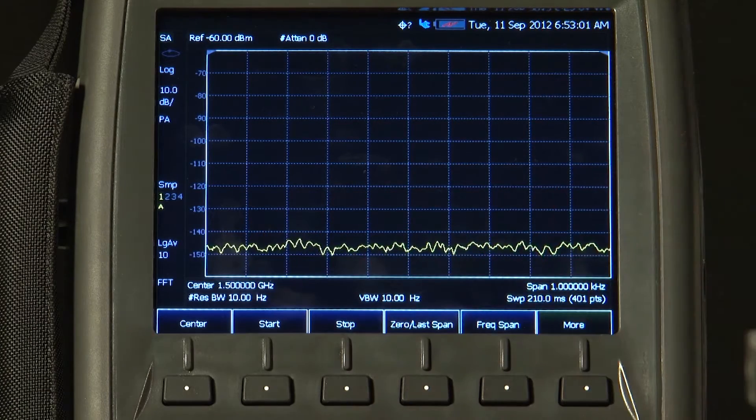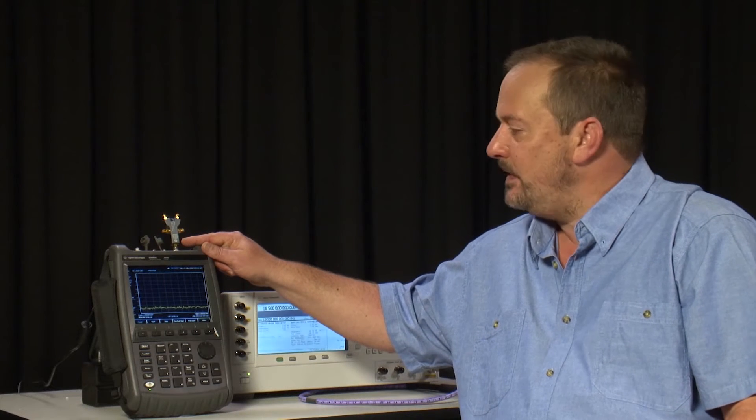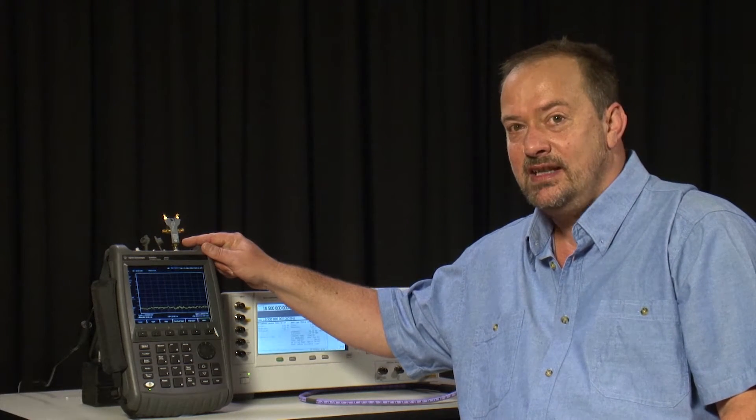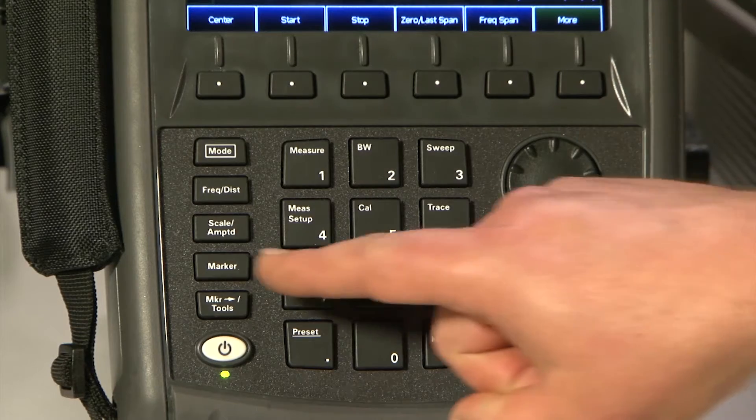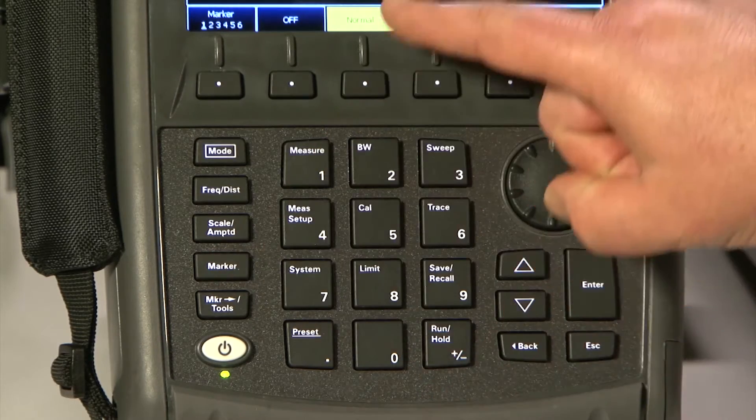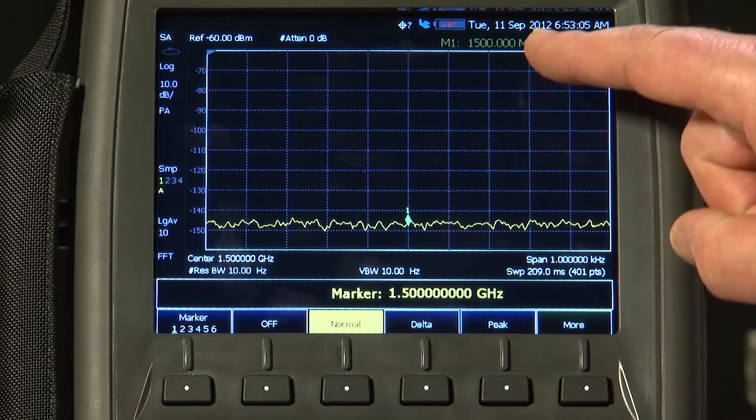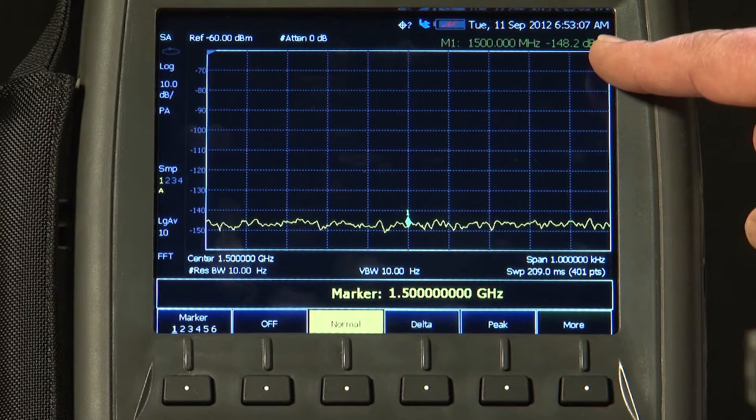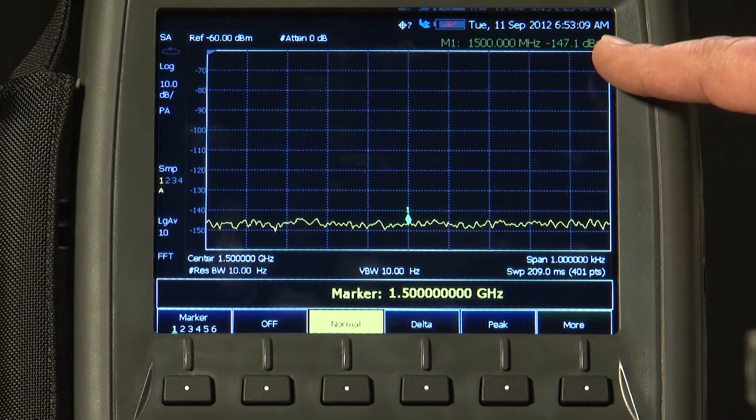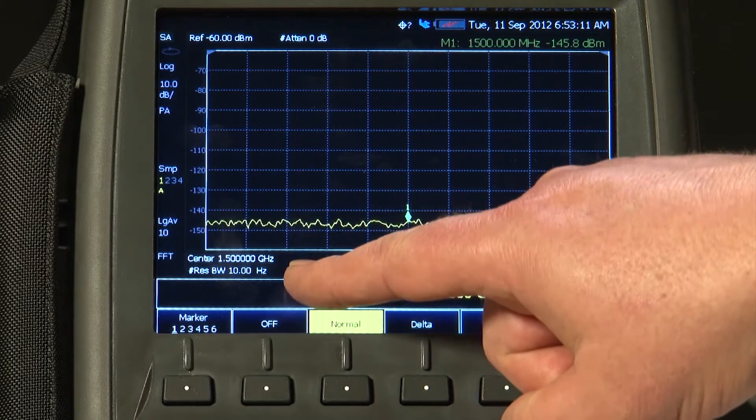I have a 50 ohm termination connected to the Spectrum Analyzer input to ensure we are not picking up any stray signals. If I turn on a marker, you will see marker 1 is measuring around minus 148 dBm. That is in a 10 Hz resolution bandwidth.